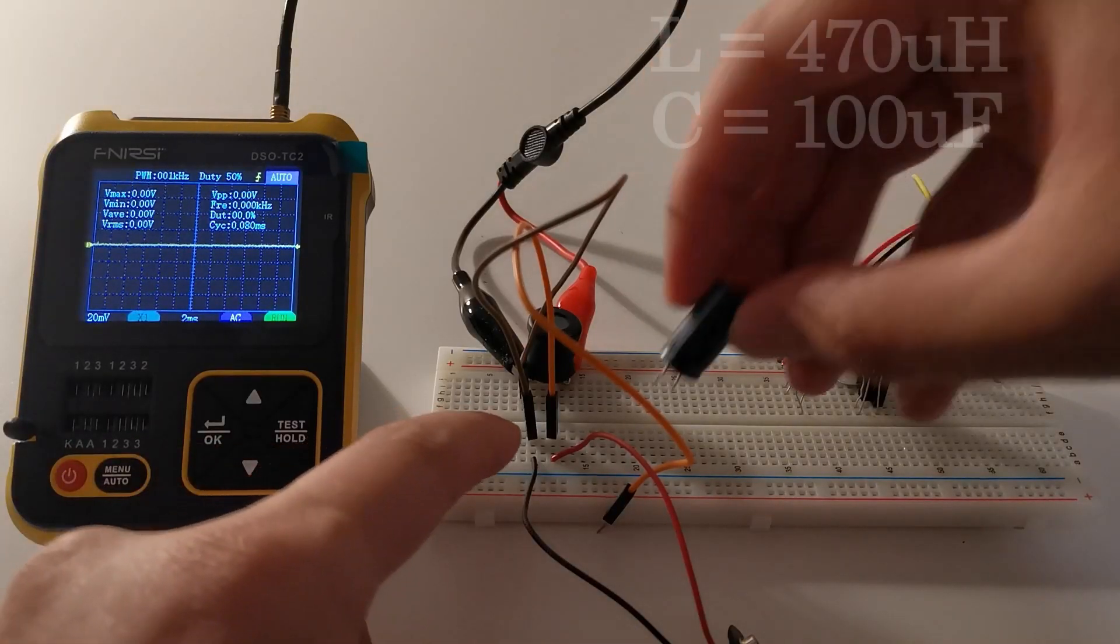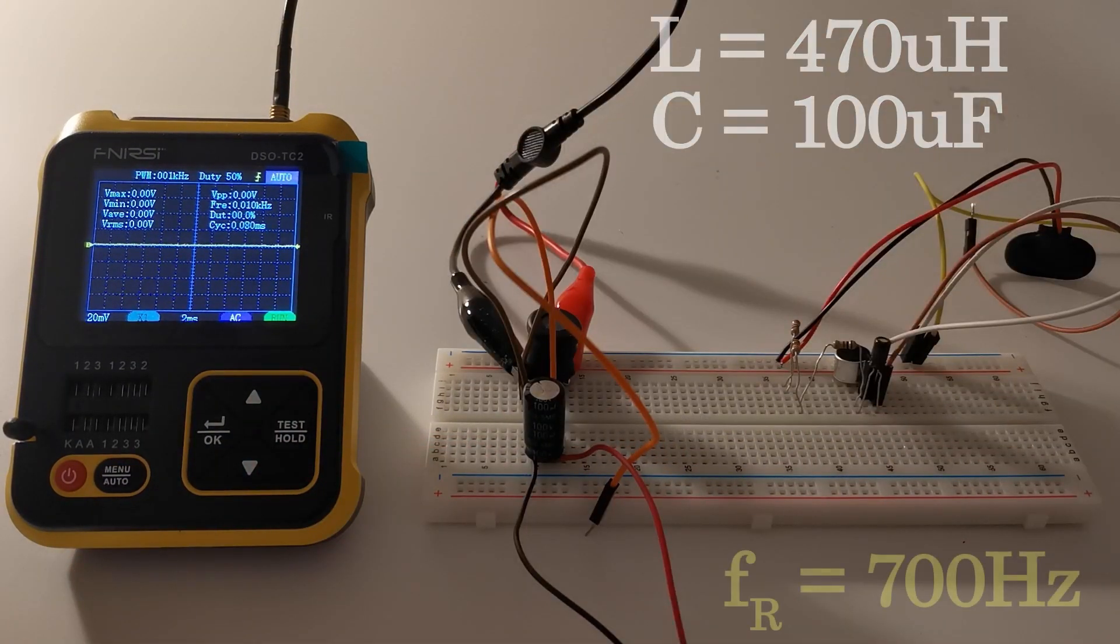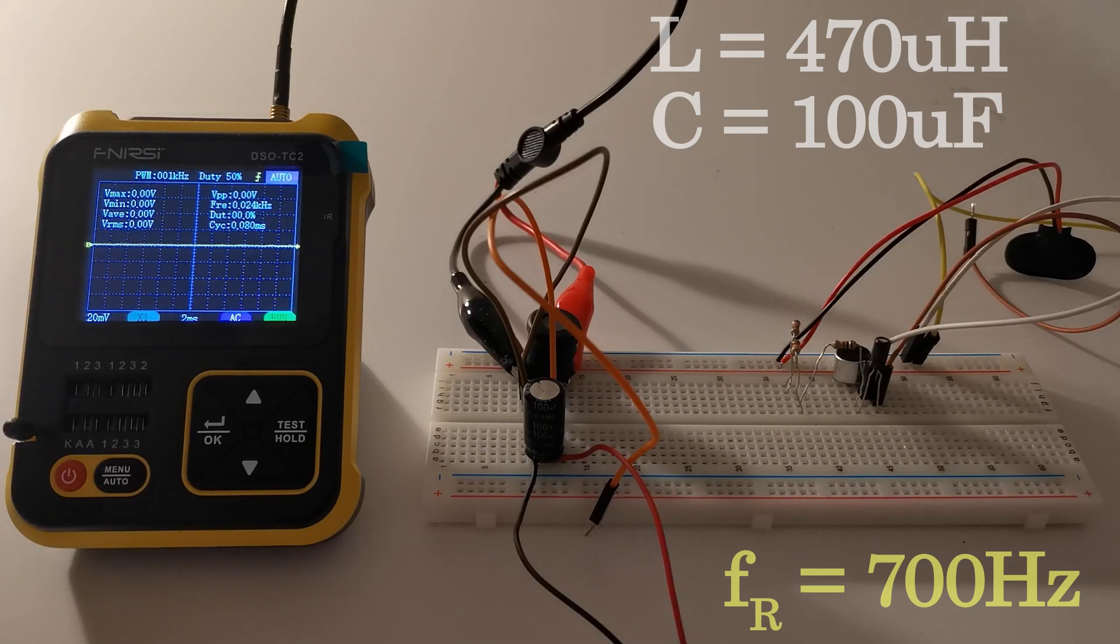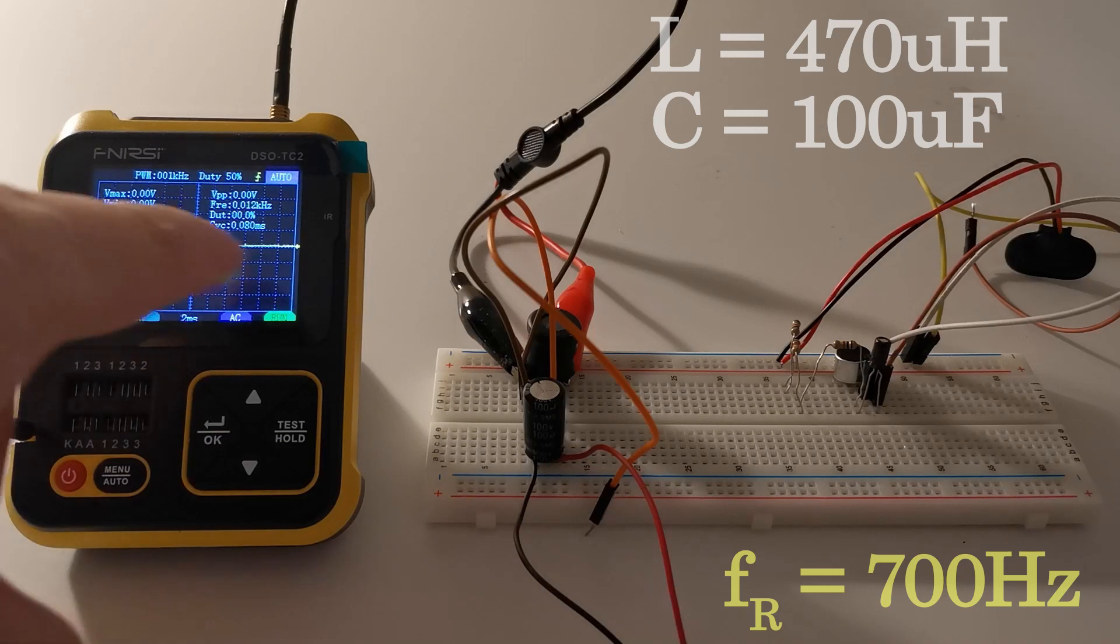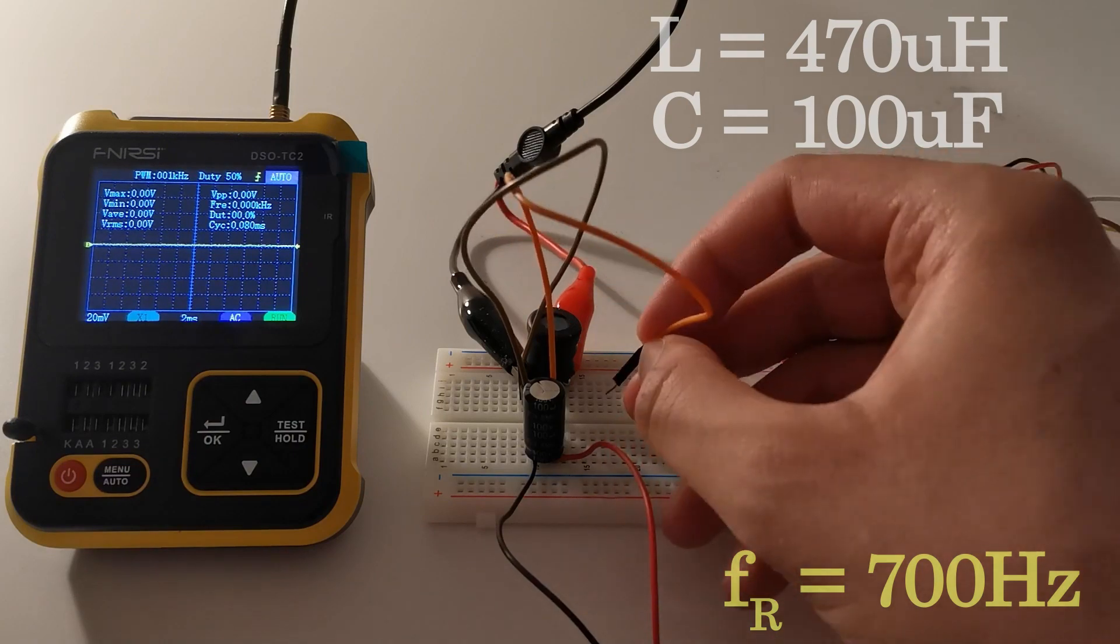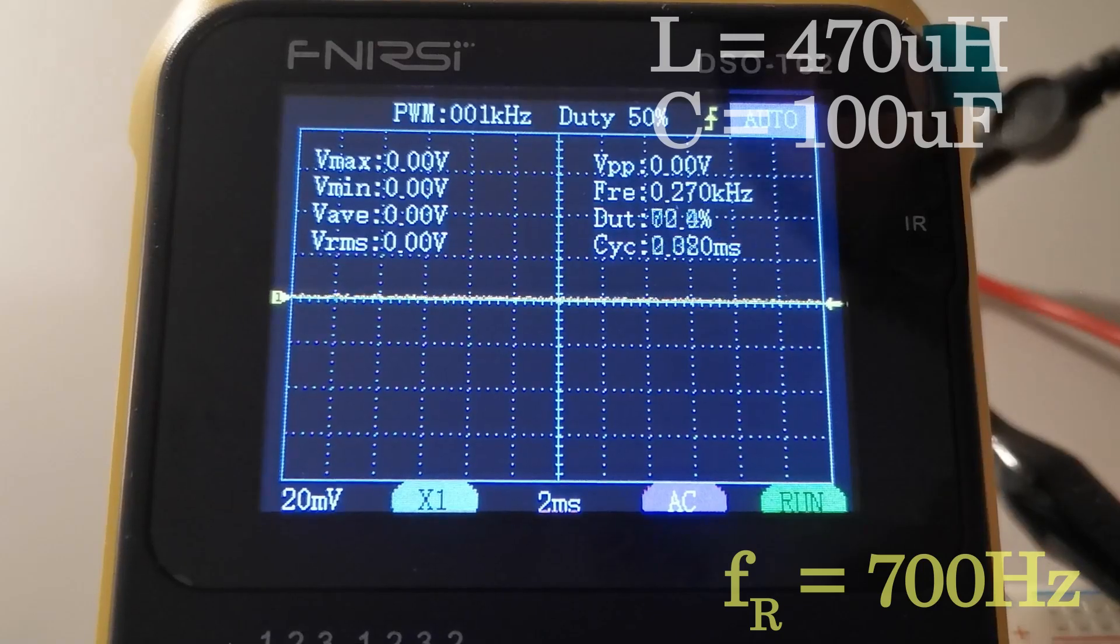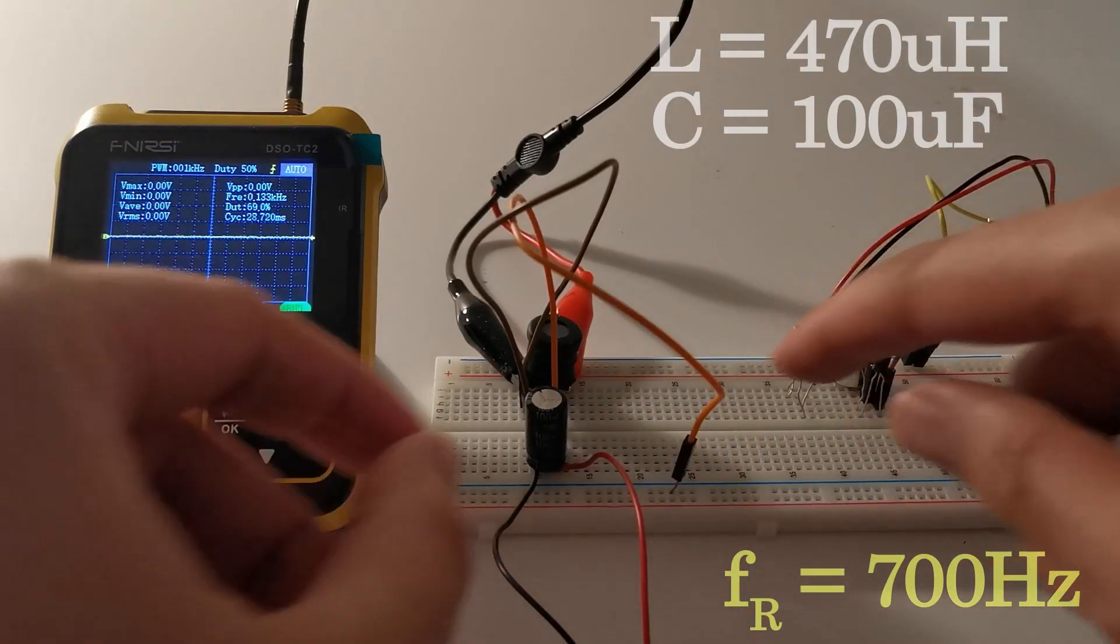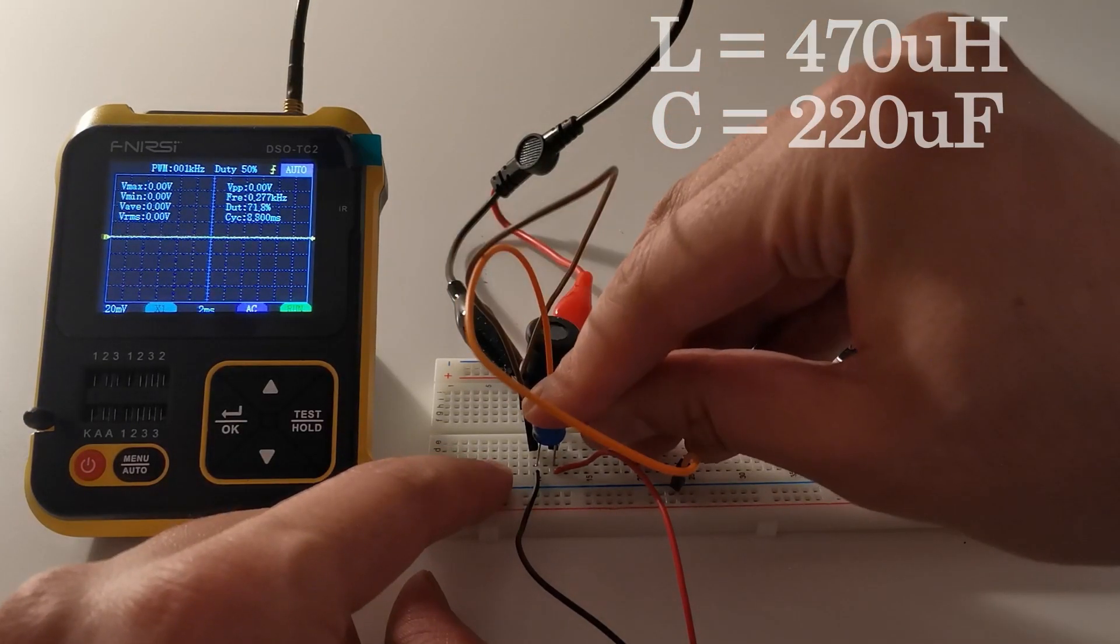Let me replace the capacitor with 100 microfarads. We expect around 700 hertz of ringing frequency that means we can see the waveform around 2 milliseconds of squares here. The oscilloscope is adjusted to 20 millivolts so we must see some ringing. Let's try it out, charging the capacitor now. Did you see it?